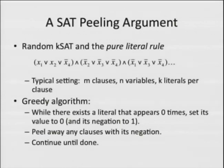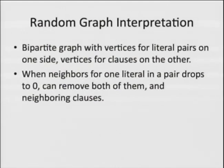While you have a literal that appears zero times in one polarity, set its value to zero and its negation to one. Once that's done, peel away that variable and all the clauses it's involved in, because those are now satisfied, and continue. You can view this in a random graph interpretation as a bipartite graph with literals on one side and clauses on the other. When one of a positive-negative literal pair drops to zero degree, you get to remove the neighboring clauses. It's slightly more complicated than the basic graph — you have pairs of things and counts to worry about.